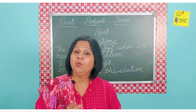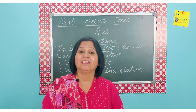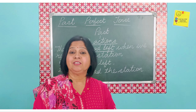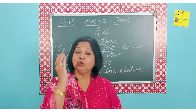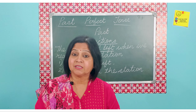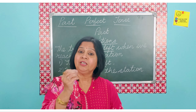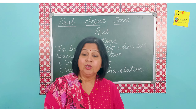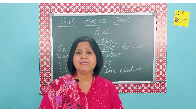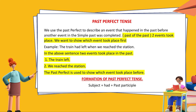Hello everyone, welcome to our topic for today: the past perfect tense. The past perfect tense talks about two events, two actions that got completed in the past. We use the past perfect tense to talk about an action that got completed before another event or action in the past. Basically, we are talking about the past of the past.